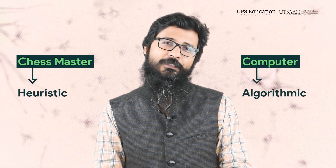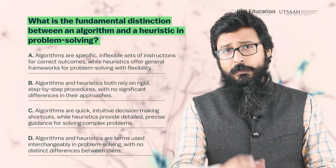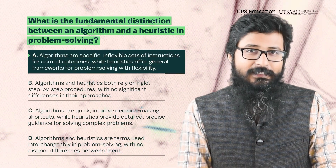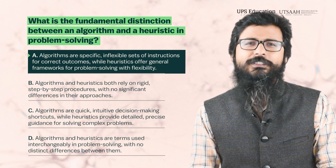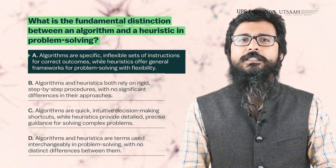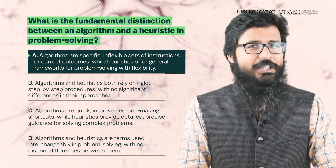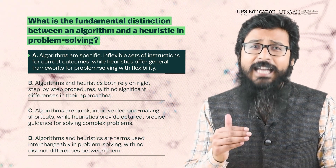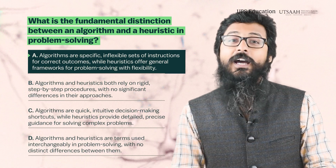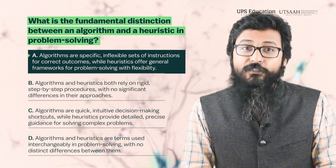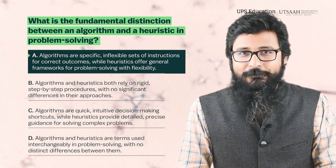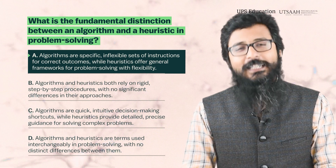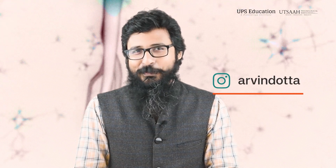For question number two, option A is correct. Algorithms are a specific, inflexible set of instructions that give us guaranteed outcomes, while heuristics offer general frameworks for problem solving with flexibility. So option A is correct. If you are having any doubt, let us know in the comment box.